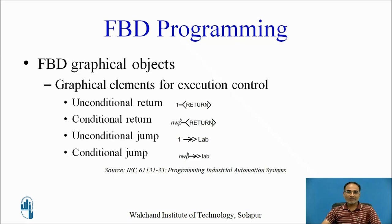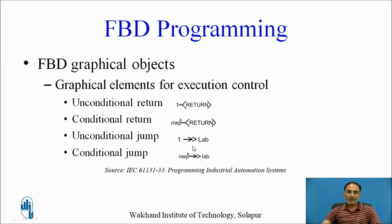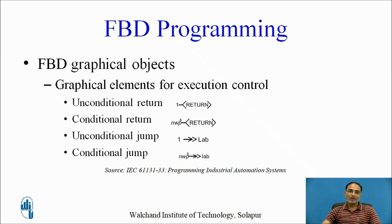Next are the elements used for execution control. You can have an unconditional return, where the left side is always one so it always returns. There is also a conditional return, where the return only happens when the Boolean expression is true. Then you can have an unconditional jump to the required label or element, and a conditional jump where the jump only occurs when the Boolean expression is true. All of these are defined in IEC 61131 part 3.